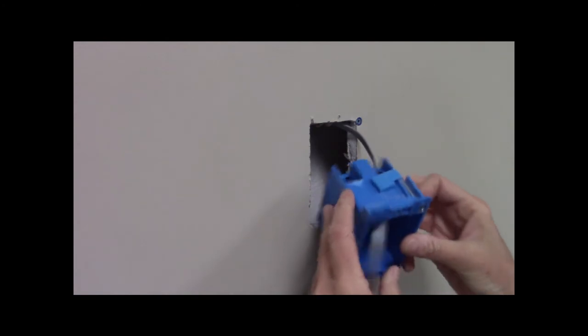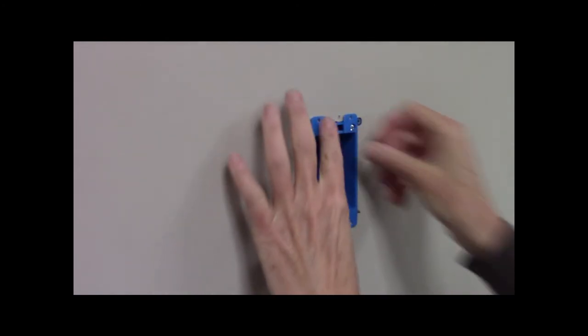After the hole is cut in the wall, feed the other end of the cable from the fan to the hole and pass through the opening in the back of the gain box. Insert the gain box into the wall opening and secure.